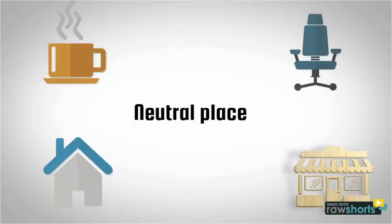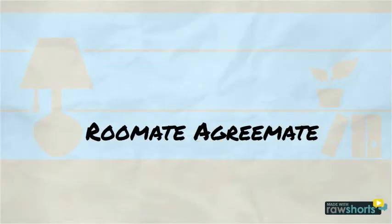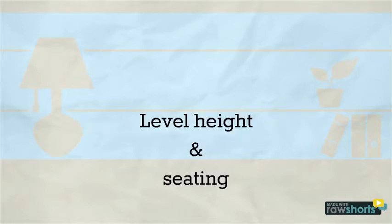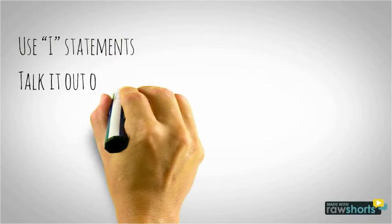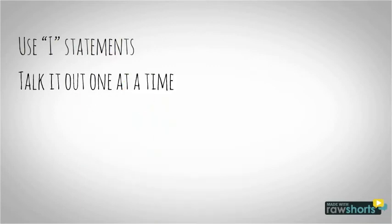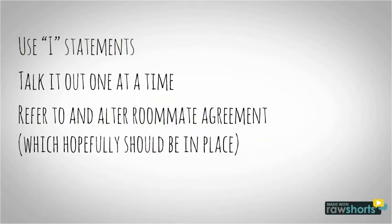When it's time to have the meeting, be sure to have it in a neutral place if it's gotten contentious. If this is just a chat about the roommate agreement, feel free to do it in their room. Make sure that everyone is seated at an equal height, as someone towering over someone, even if unintentional, can have a negative effect on the situation. Have the students use I statements. Have the students share their experiences as roommates one at a time and be sure to make sure they are setting realistic expectations.